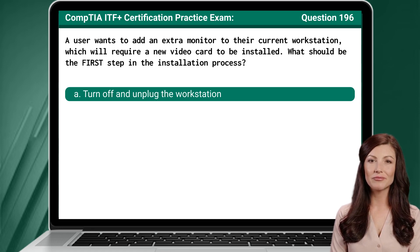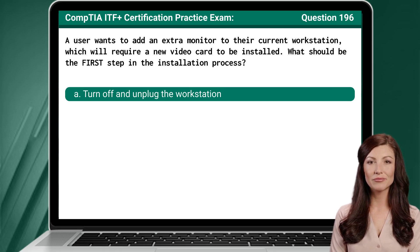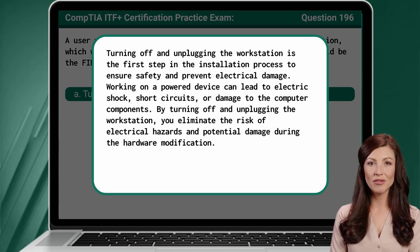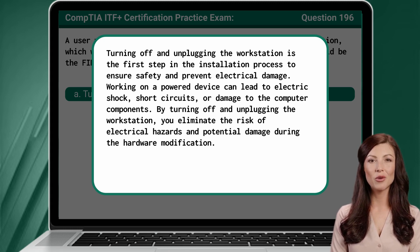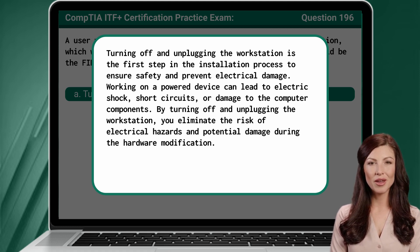The answer is A: Turn off and unplug the workstation. Turning off and unplugging the workstation is the first step in the installation process to ensure safety and prevent electrical damage. Working on a powered device can lead to electric shock, short circuits, or damage to the computer components. By turning off and unplugging the workstation, you eliminate the risk of electrical hazards and potential damage during the hardware modification.